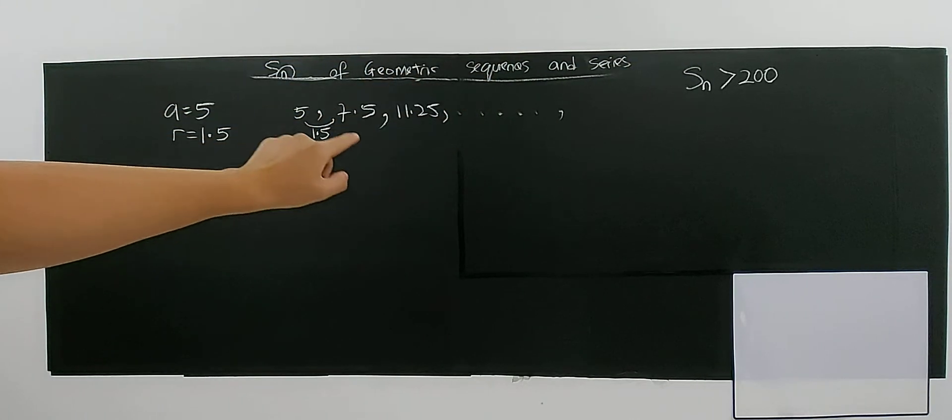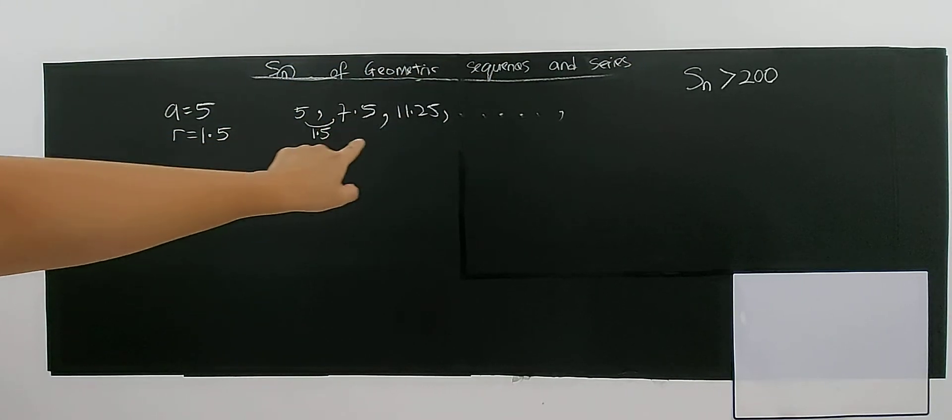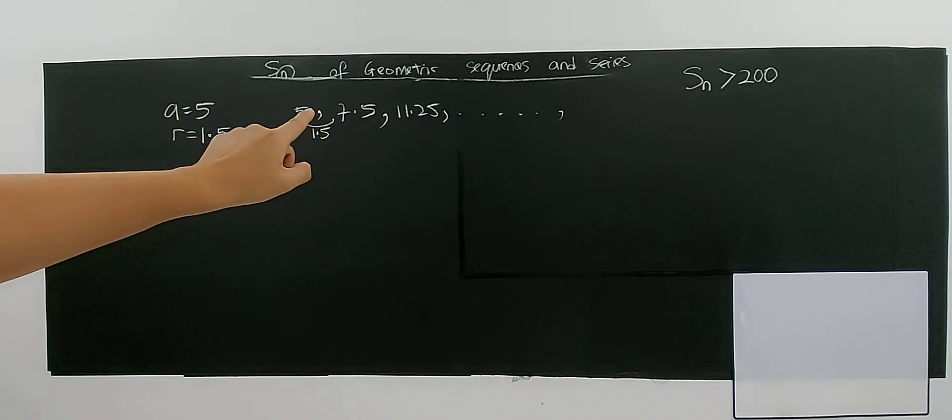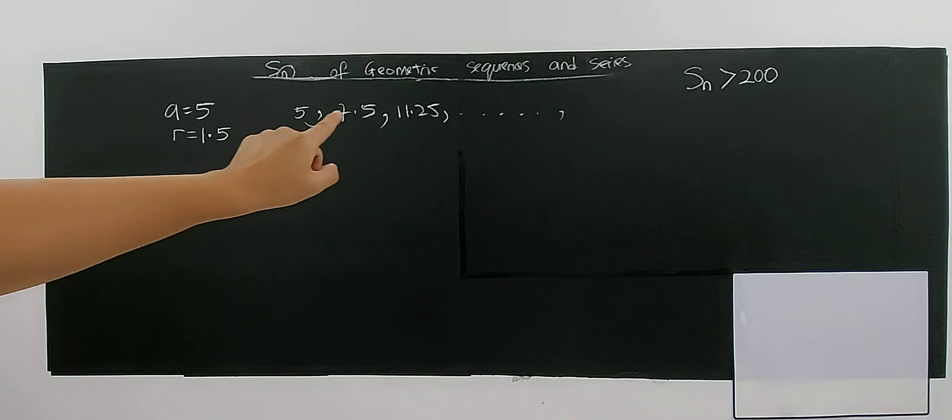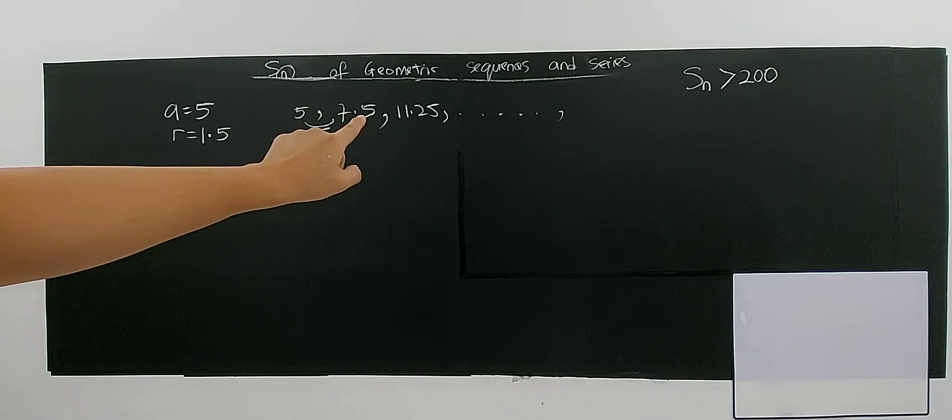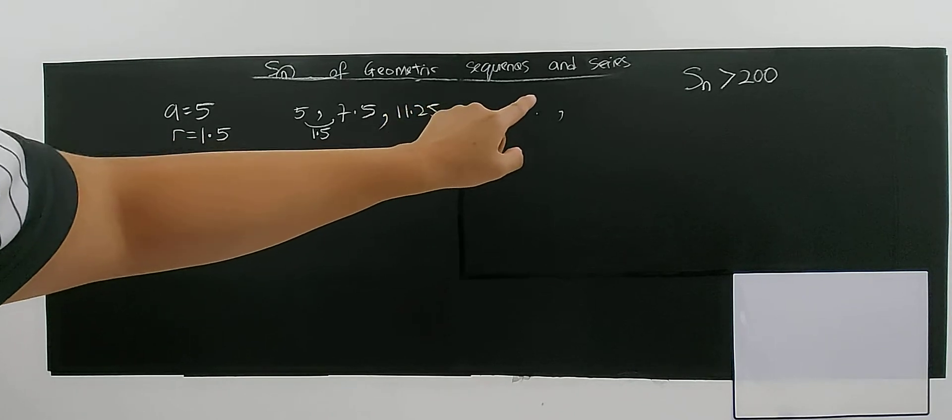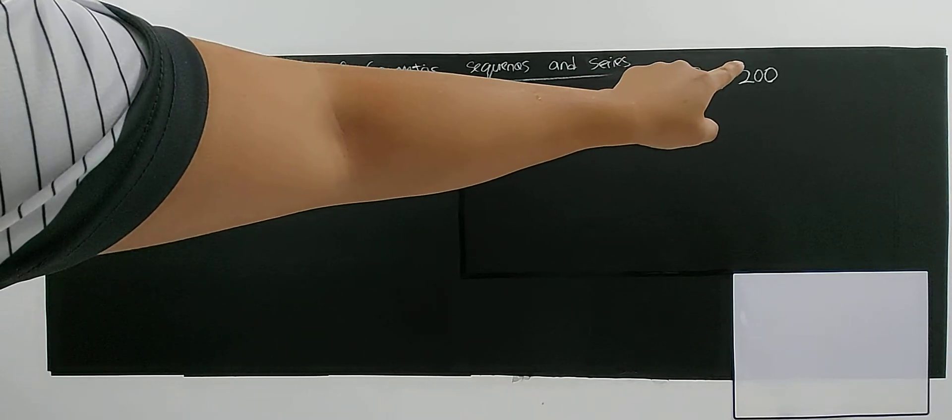So the question here is, when is the time when I add? This one of course is 12.5. You add with this one, the number getting bigger and bigger, until when the number is getting more than 200.